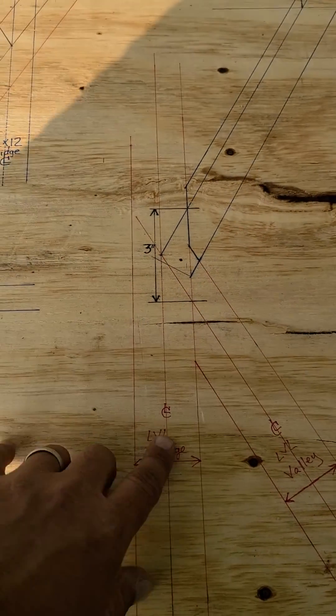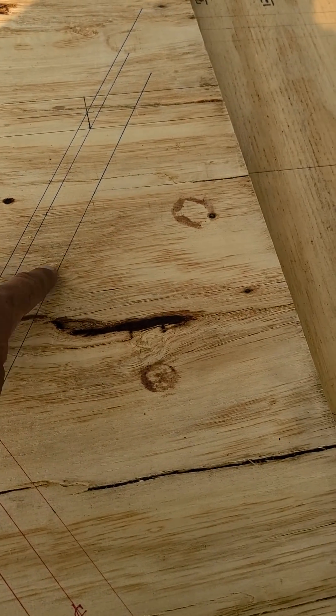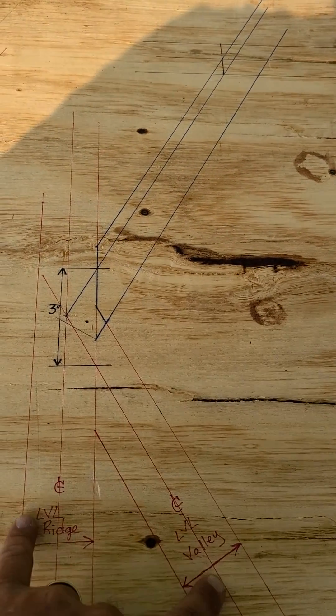Another similar example with an LVL ridge. Same scenario, broken irregular hip, sharing an irregular valley.